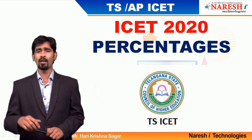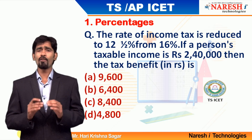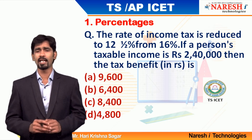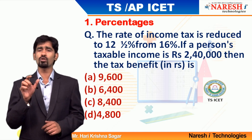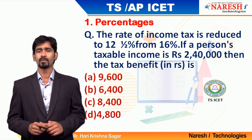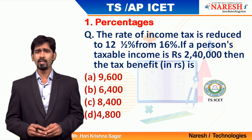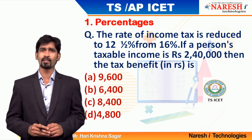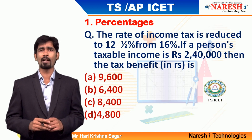Let me look at question number 1. The rate of income tax is reduced from 16 percentage to 12.5 percentage. If a person's taxable amount is 2,40,000 rupees, then what is the tax benefit in rupees? It is very clear that 16 percentage was the tax, but that 16 percentage tax is reduced to 12.5 percentage.